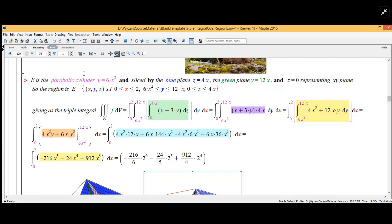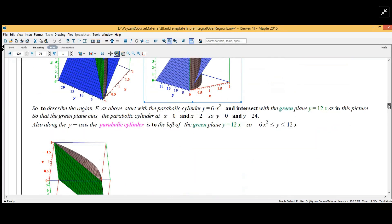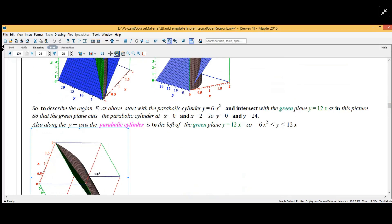How we determine this region correctly is it's kind of hard because you got too many planes. It's best to start with the intersection of the parabolic cylinder with the green plane which is y equals 12x.